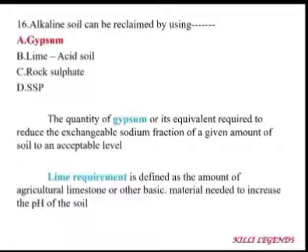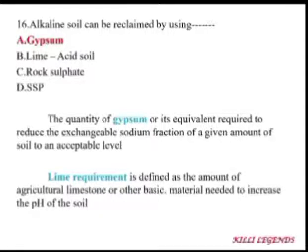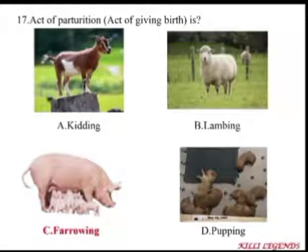Alkali soil can be reclaimed by using gypsum; acid soil can be reclaimed by lime. The quantity of gypsum required to reduce exchangeable sodium fraction of a given amount of soil to an accepted level is called gypsum requirement. Lime requirement is defined as the amount of agricultural lime or other basic material needed to increase the pH of acid soil to a neutral pH of 7.